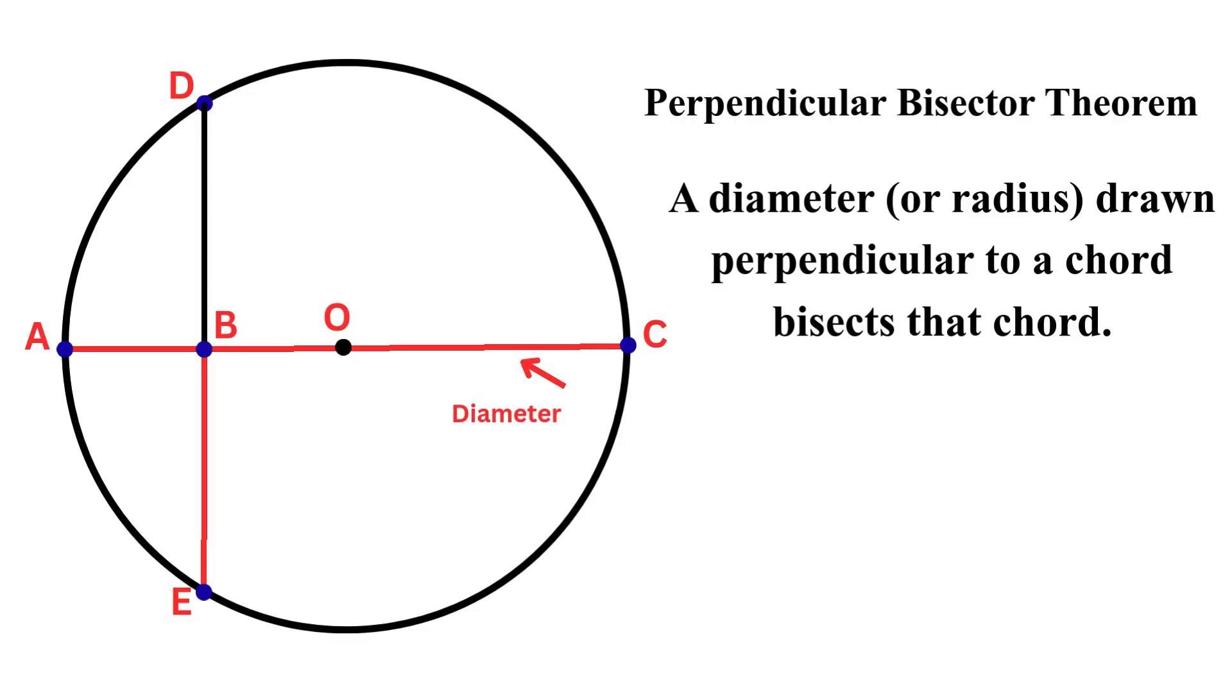Let's look at our measurements. We are given that line segment DB equals 8 units. This means line segment BE also equals 8 units. Now the line segment BC equals 12 units.